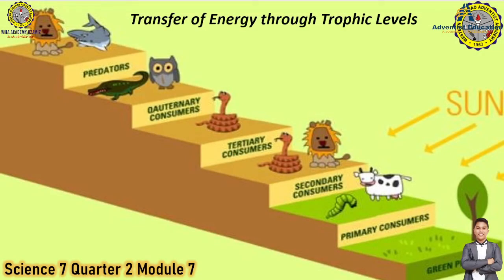Hi everybody, welcome back to the third part of our discussion about the ecosystem. Now we are going to discuss the transfer of energy through trophic levels. In the ecosystem, there is a transfer of energy from the producers to the consumers — the primary consumer, the secondary consumer, the tertiary, the quaternary, and so on. This topic will also cover the food chain and the food web.